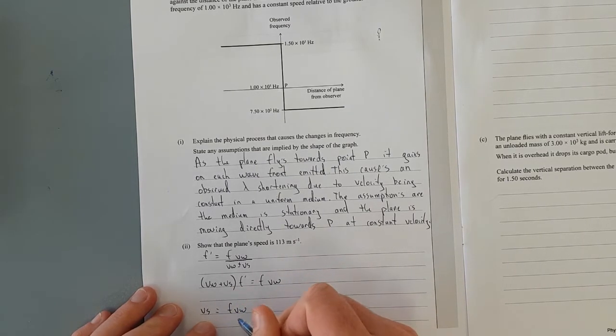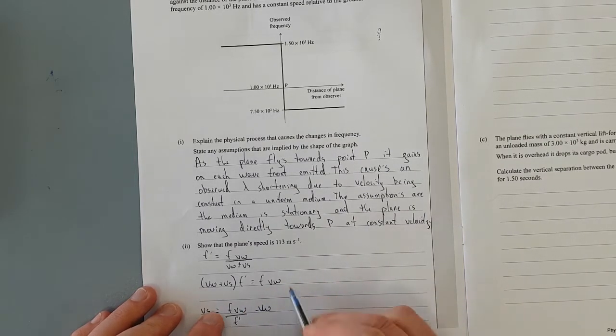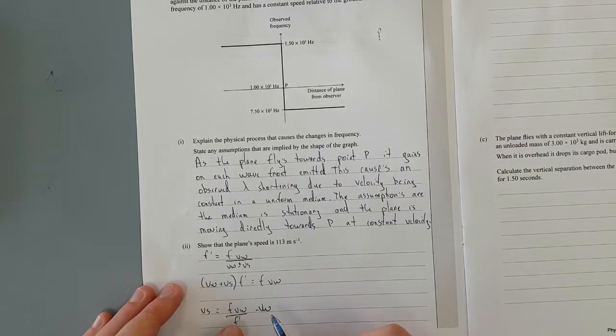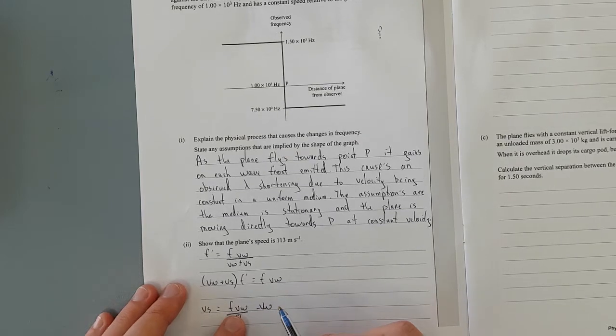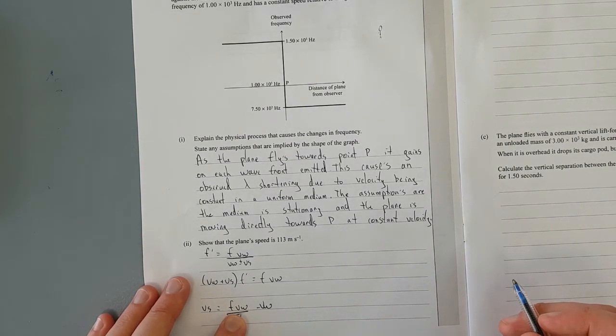It's going to be equal to Vw divided by F dash minus the velocity of the wave. Because here I had the velocity of the wave and I would have divided by... That's right.